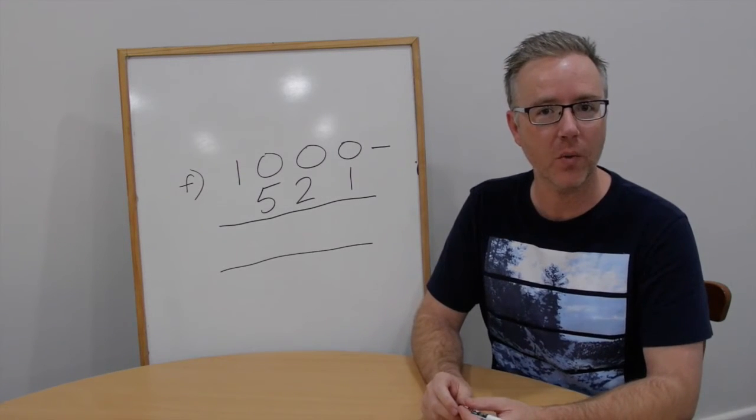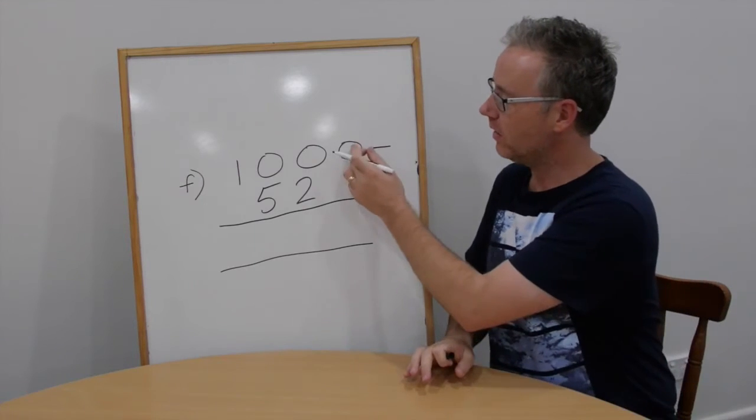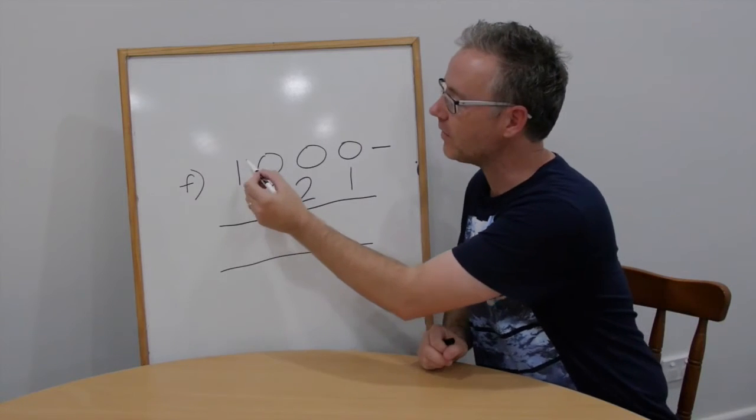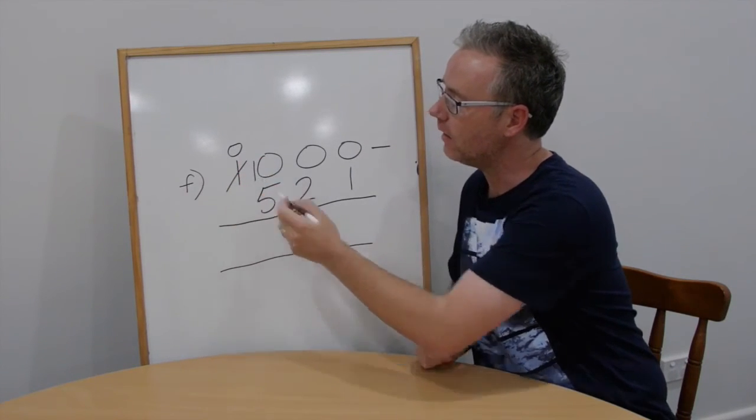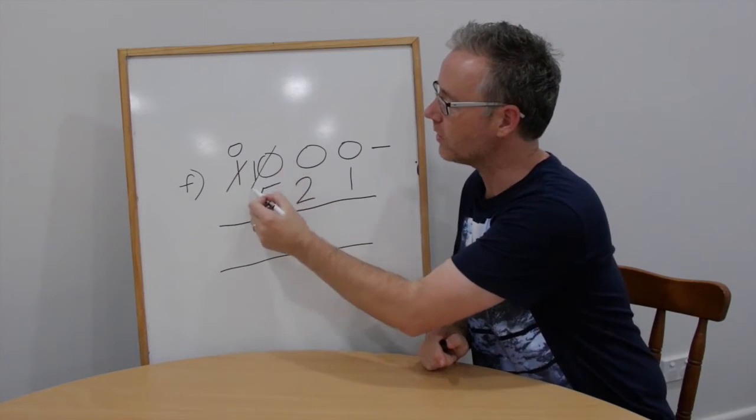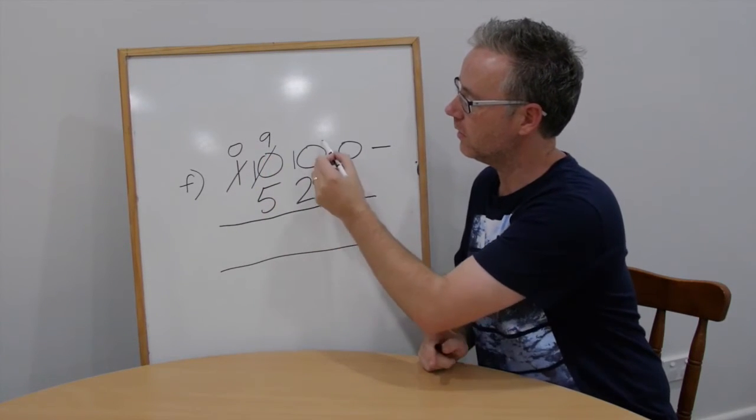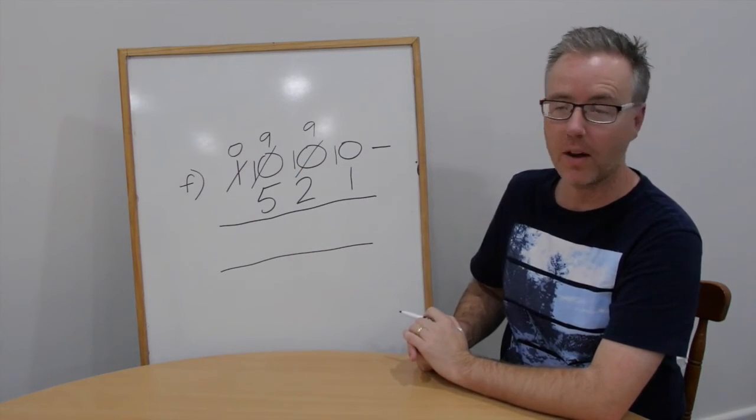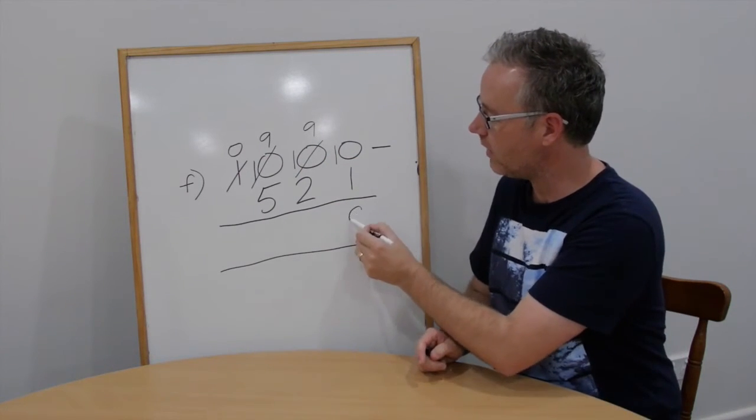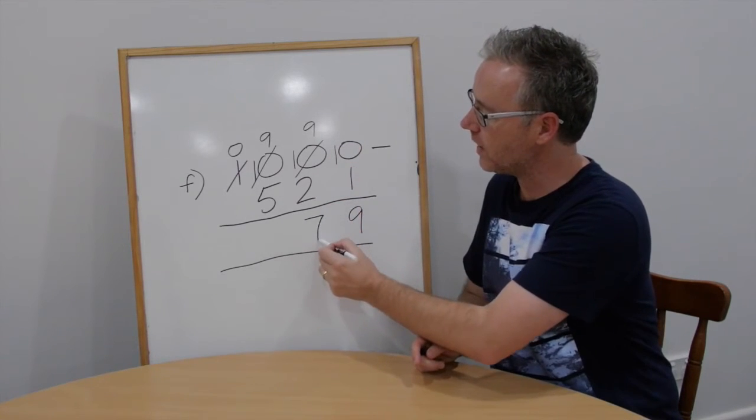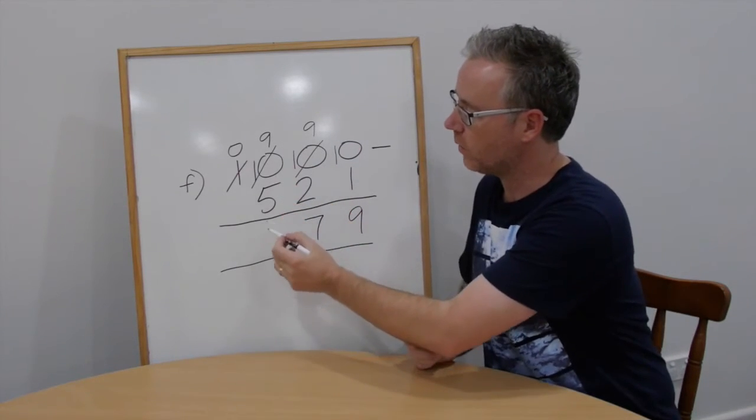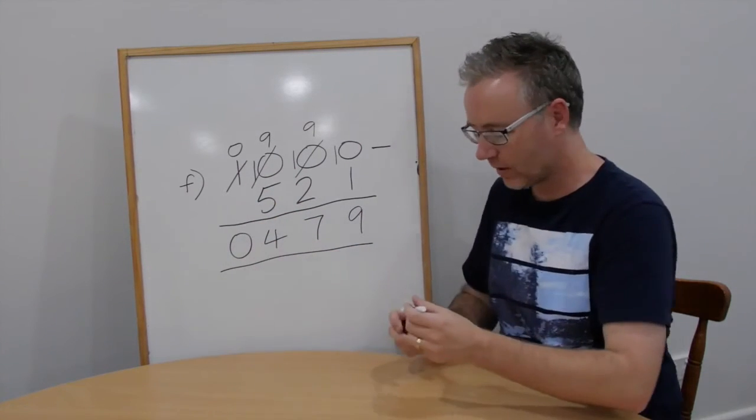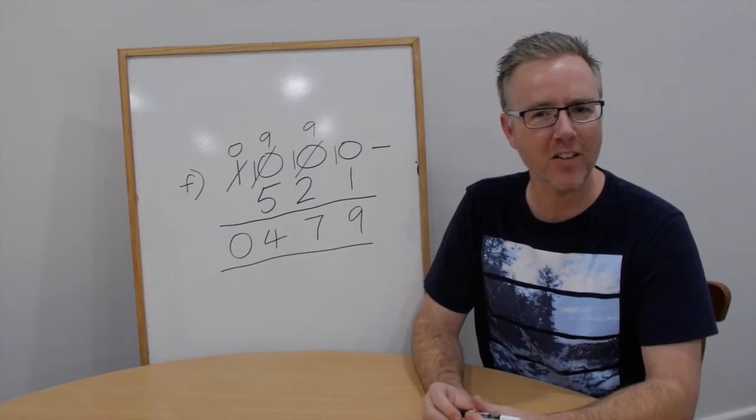Question F. We have 1000 take away 521. 0 take away 1 we can't do. So we need to go all the way across to the thousands column and trade all the way across. Just like that. So now we have 10 take away 1 is 9. 9 take away 2 is 7. 9 take away 5 is 4. And of course, 0 take away 0. Answer, 479. Check your estimate.